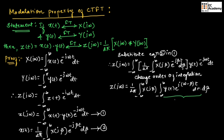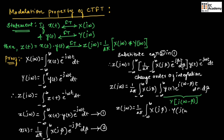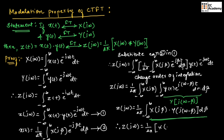For this term, we can write Y(j(ω minus β)). Therefore, we can write the above expression as Z(jω) is equal to 1 by 2π integration of minus infinity to infinity X(jβ) into Y(j(ω minus β)) dβ. This term is similar to the formula of convolution. Therefore, we can write Z(jω) is equal to 1 by 2π into X(jω) convoluted with Y(jω). So, this is the proof.